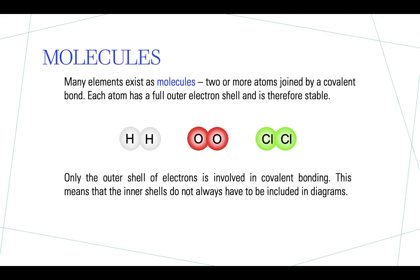Another quick reminder that many elements exist as molecules. Molecules are two or more atoms joined together by a covalent bond. In a covalent bond, each atom has a full outer electron shell and is therefore stable. When we are drawing bonding diagrams it is important to remember that only the outermost shell of electrons is involved in covalent bonding, meaning we do not have to draw any of our inner shells.